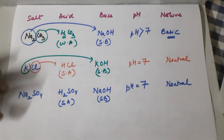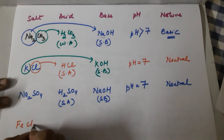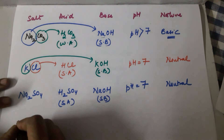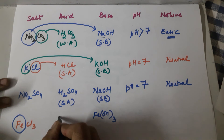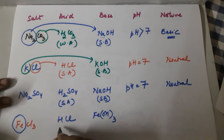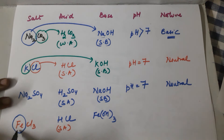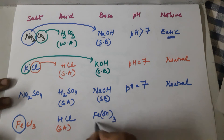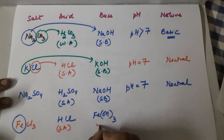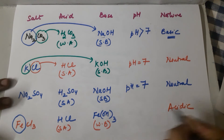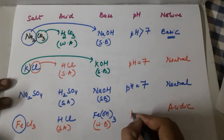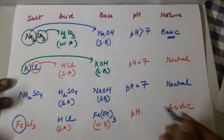Last example: ferric chloride, FeCl₃. Making the base gives Fe(OH)₃, since iron is ferric. Cl⁻ gives HCl — a strong acid. Iron is a low-reactive metal in the reactivity series, so Fe(OH)₃ is a weak base. A strong acid with a weak base gives an acidic salt. Therefore ferric chloride is acidic in nature and the pH is less than 7.